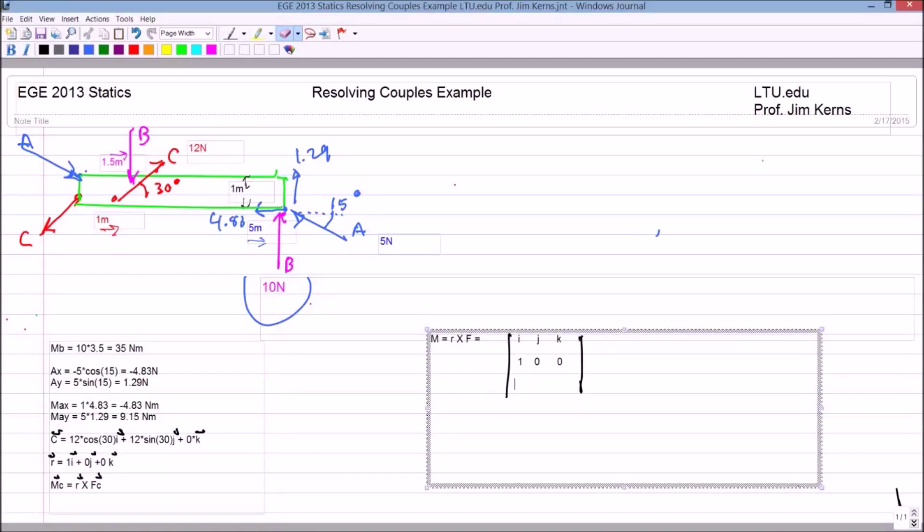And our F vector we determined was, let's see, 12 times the cosine of 30 degrees i, which comes 10.39, and j was 12 times the sine of 30, which is six, and k was zero.